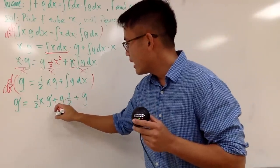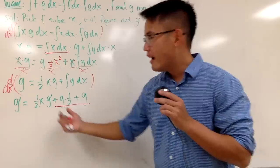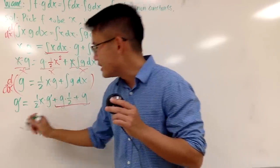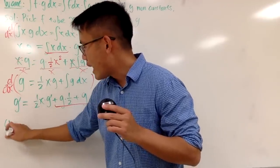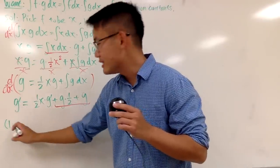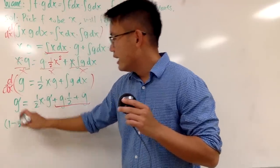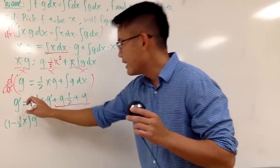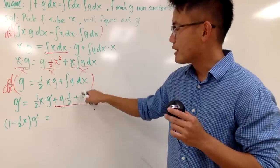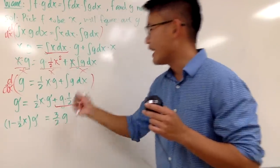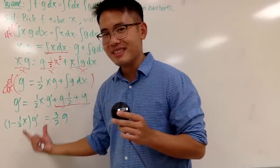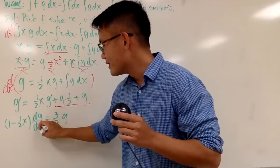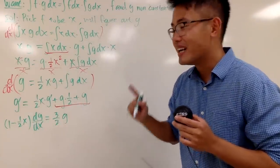We can handle it. On the right-hand side, we combine terms and move things around. Bringing the one-half x times g prime to the other side and factoring out g prime, we get: one minus one-half x, times g prime. And that equals one-half g plus one g, which simplifies to three-halves g. This is a separable differential equation. I'll write g prime as dg over dx to make that clear.